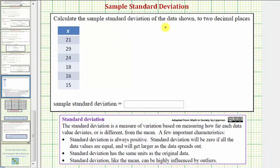We want to calculate the sample standard deviation of the data shown below to two decimal places. The standard deviation is a measure of variation based on measuring how far each data value deviates or is different from the mean.